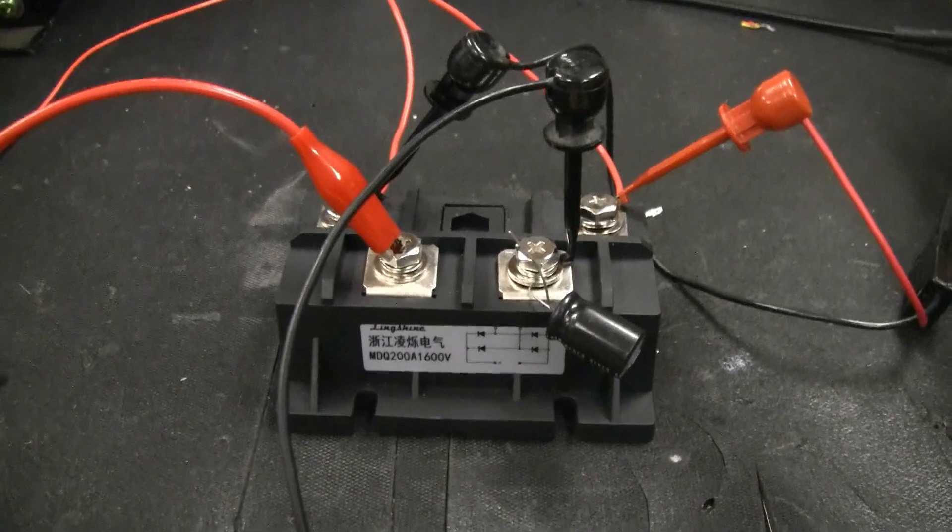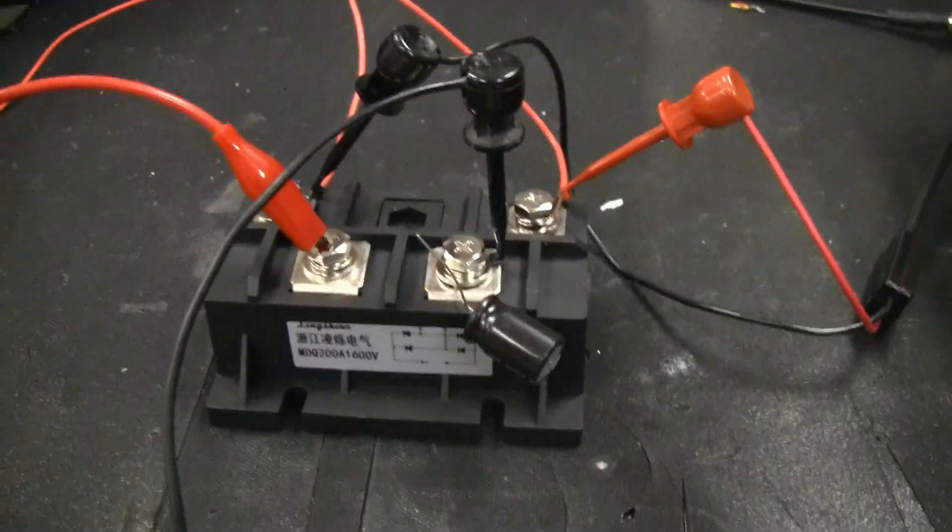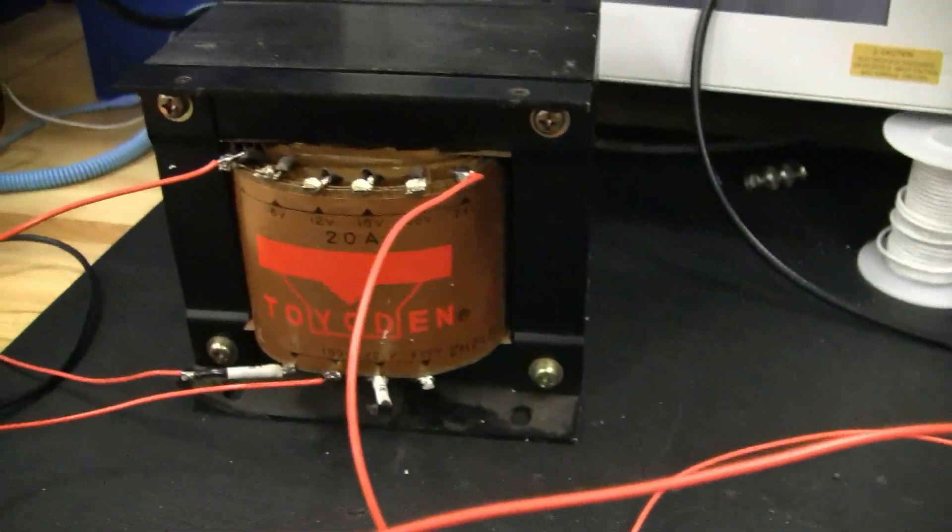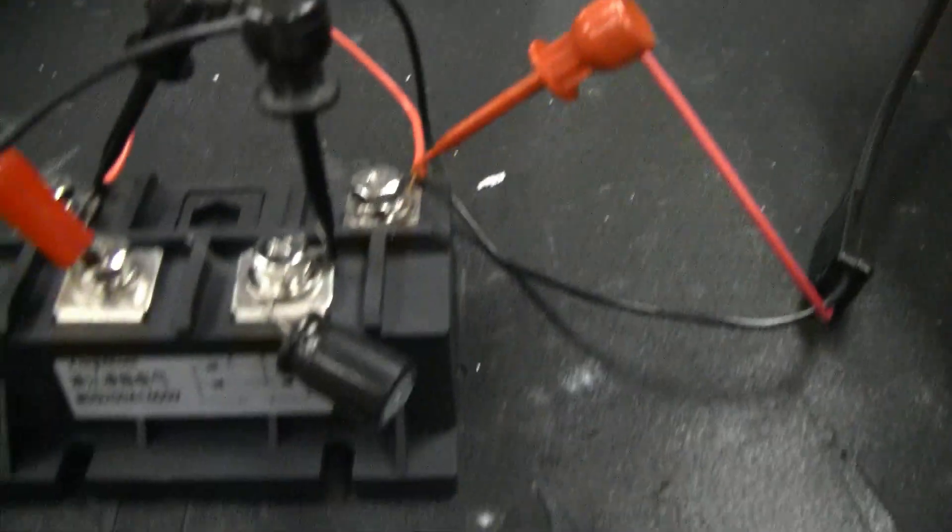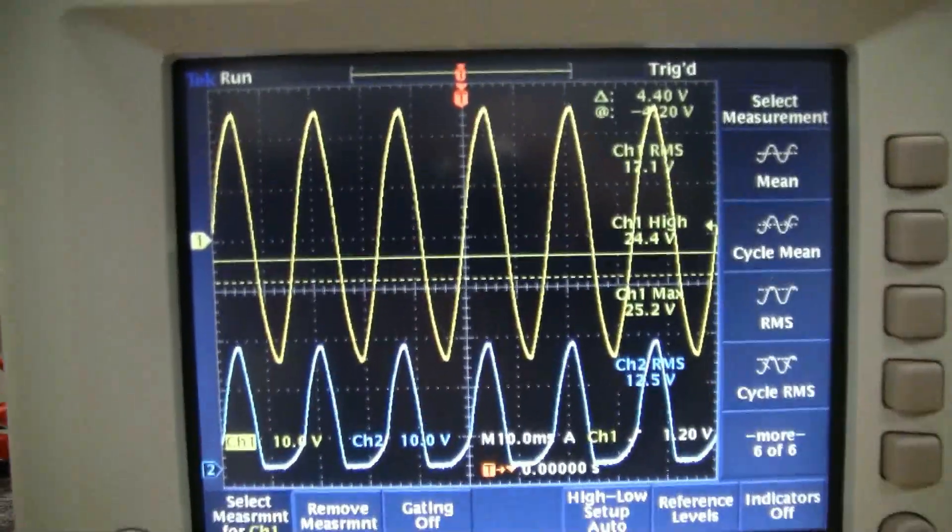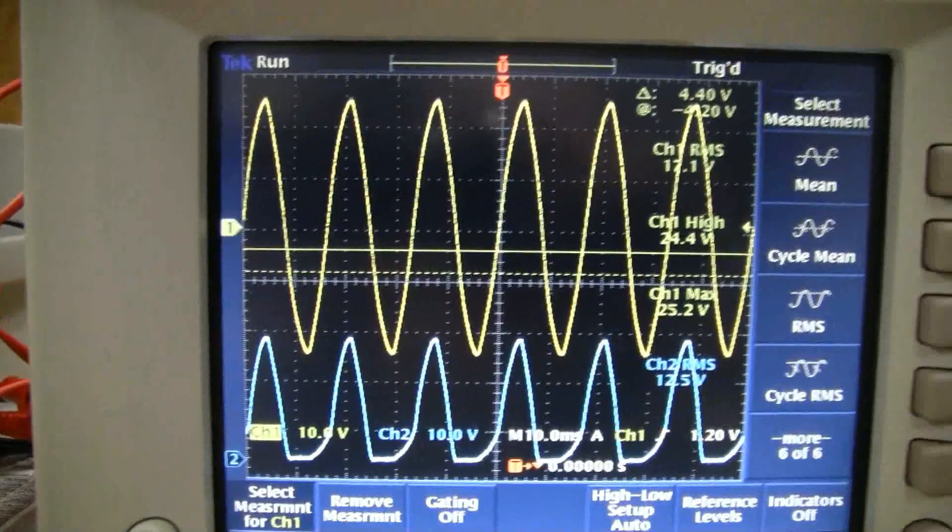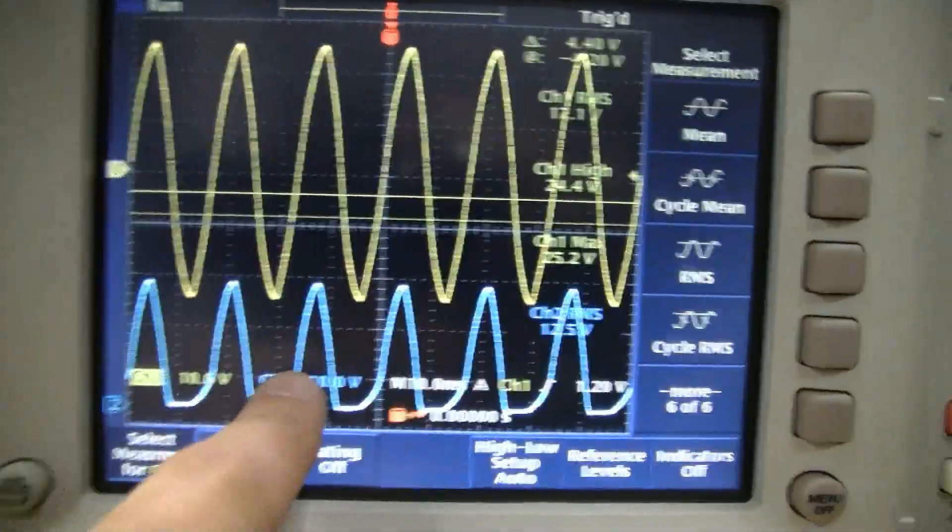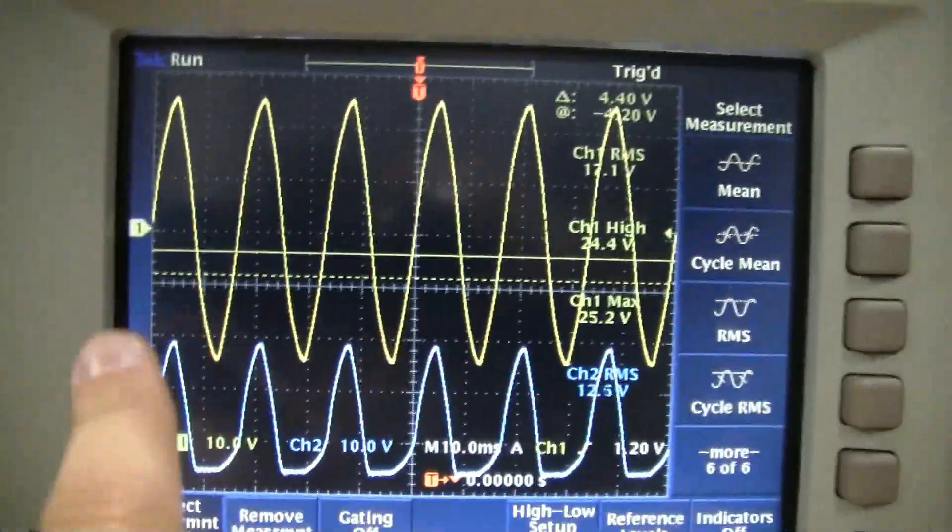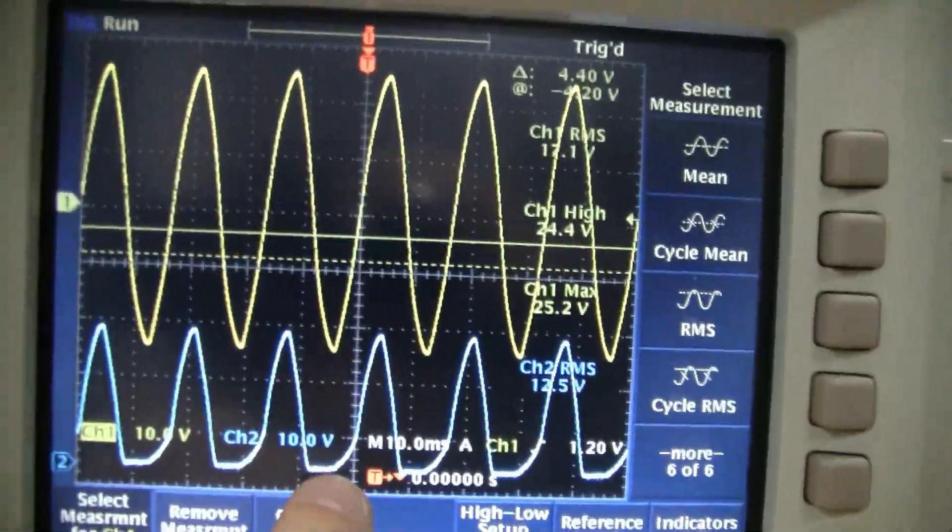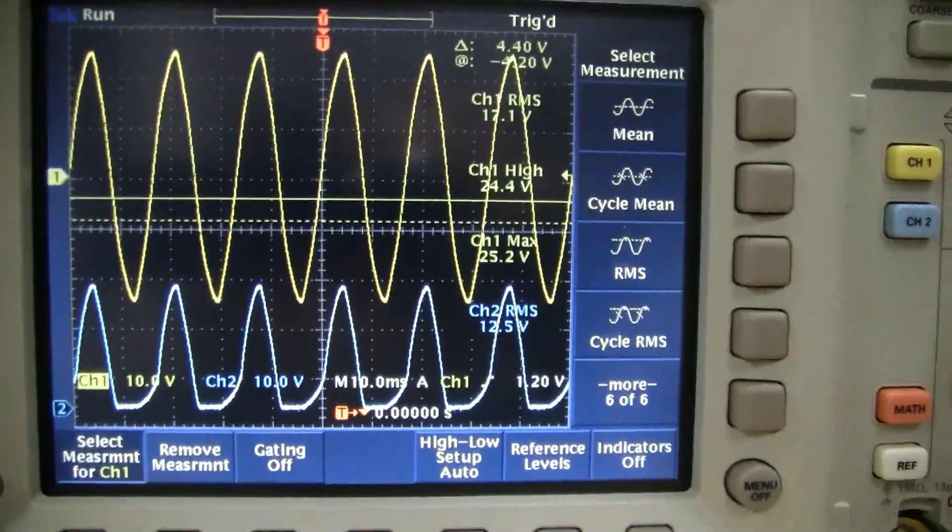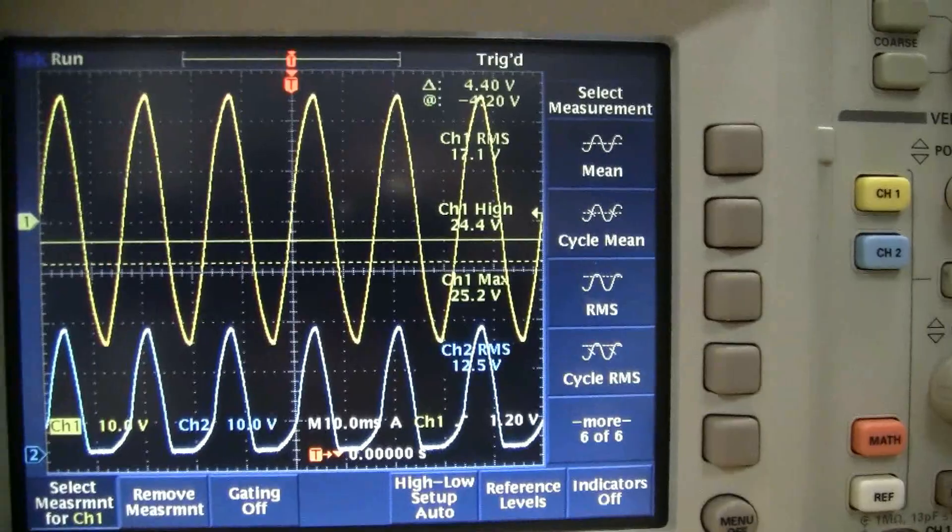So I've got the rectifier all decked out with oscilloscope leads to measure. And from the transformer, we've got about 17 volts RMS on the input. And when we measure the output, we can see that the rectifier isn't working properly. If this full bridge rectifier is working the way it should, we should have on the output here, the lower waveform that's blue, we shouldn't have any flat spots in here. There should be another hump of output. And so it's not working properly.